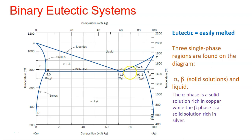The liquidus lines A-E and F-E eventually meet at point E, which is designated by composition Ce and temperature Te, which is 779 degrees Celsius. This horizontal line is also known as the isotherm, represented by line B-E-G, and it passes through point E — where E stands for eutectic.